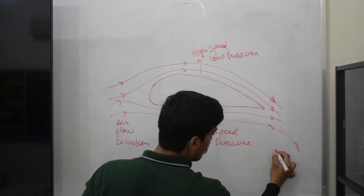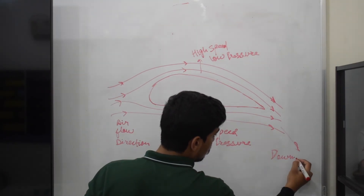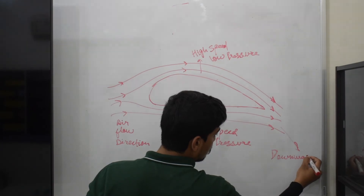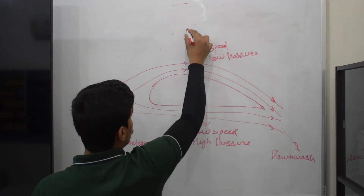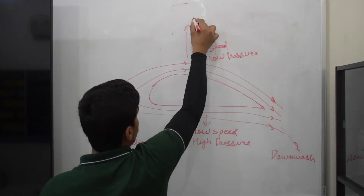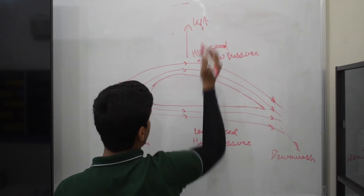This downward push of air is called downwash. Due to Bernoulli's principle, air wants to travel from the high-pressure area to the low-pressure area, and this causes lift. Also, Newton's third law of motion comes into play here: the air pushed downwards exerts an equal and opposite force upwards towards the plane. Both these principles together work to cause the aircraft to rise.